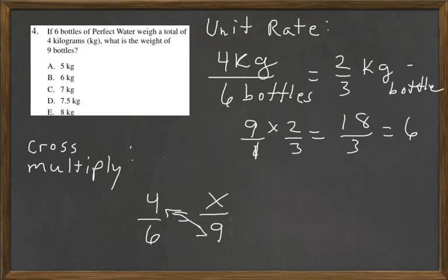Four times nine equals thirty-six. And six times x equals six x. Divide by six to get the x by itself.